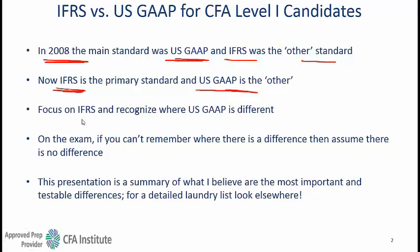My advice to candidates now is that you should focus on IFRS because that's the main standard, recognize that US GAAP is the other standard, understand IFRS, and then just recognize the areas where US GAAP is different. On the exam if you get confused and can't remember whether there is a difference, assume there is no difference because by and large US GAAP and IFRS are converging and they are fairly similar. Sometimes the wordings might be different but the principle or objective behind both standards is similar enough.